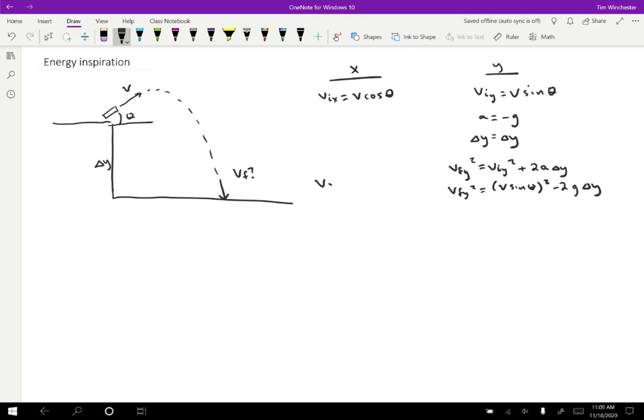The final X velocity squared is just going to be V squared cosine squared theta. So if I want to find the final velocity, that's going to be the square root of the final X velocity squared plus the final Y velocity squared. And I have quantities for both of those. So square roots of V squared cosine squared theta. That was my VX. My VY squared is going to be V squared sine squared theta minus two G delta Y.